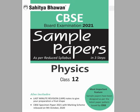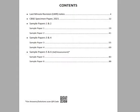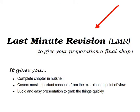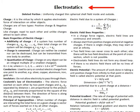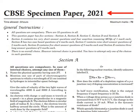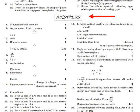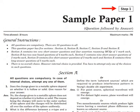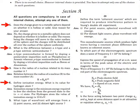Sahiti Bhavan presents CBSE Board Examination 2021 sample papers for Class 12th Physics. This book contains the following features: last minute revision notes of all the relevant topics given in the syllabus, and the latest CBSE specimen paper 2021 with complete answers. In step one of the sample papers, questions are followed by the answers.